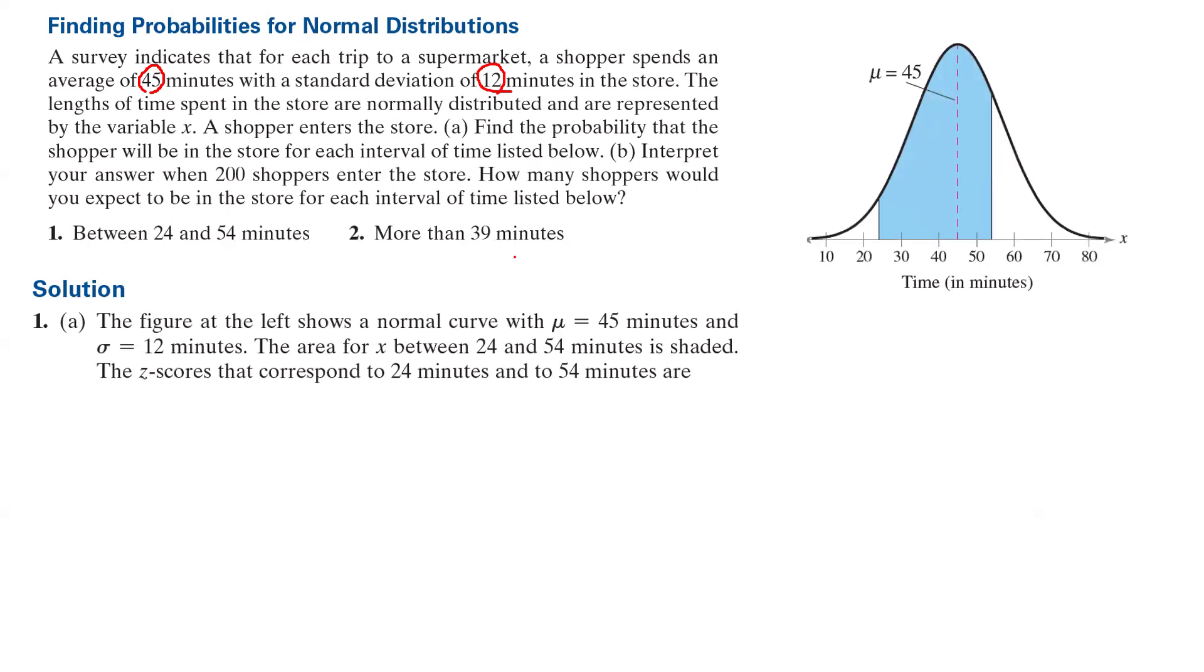First of all, take a look at the information and the graph associated with problem one, between 24 and 54. You're looking at this little interval here, 24 and 54. Below the curve, you're going to shade this region. The mean is 45, the balancing point, with standard deviation which is 12 minutes.